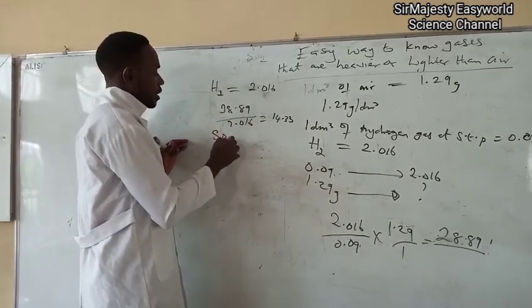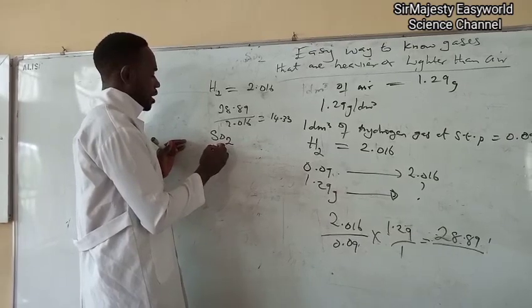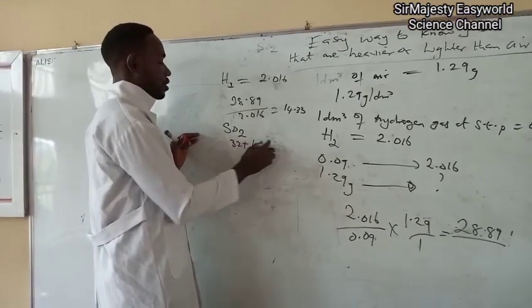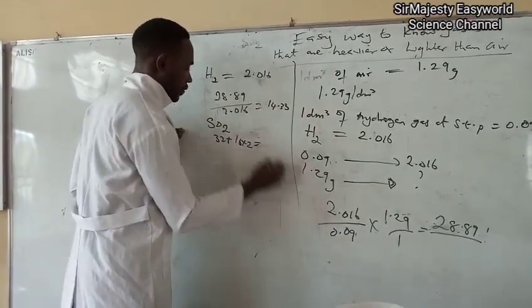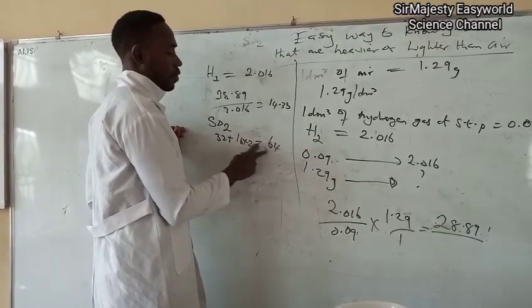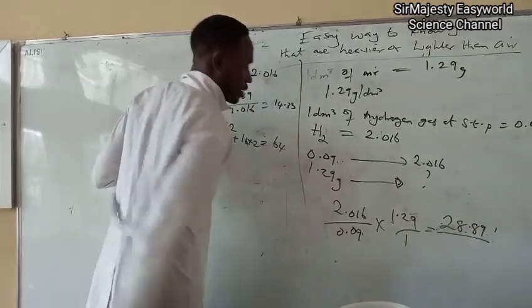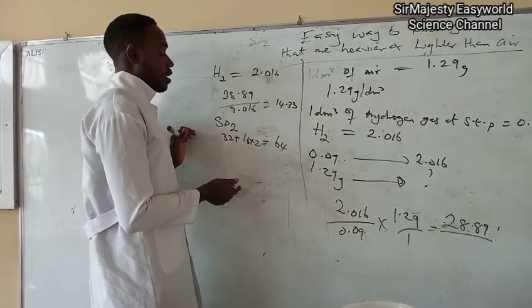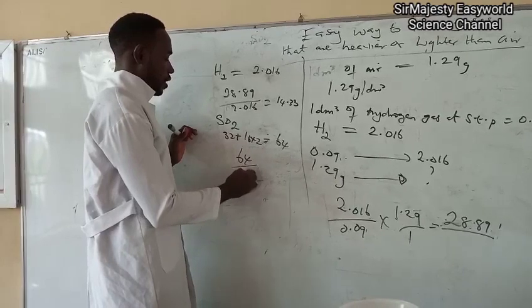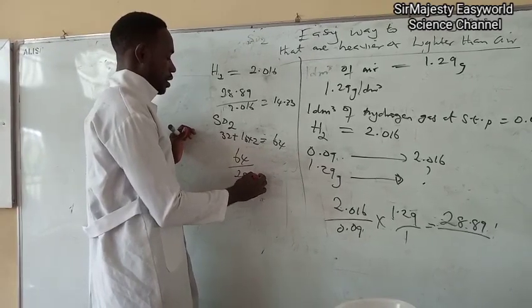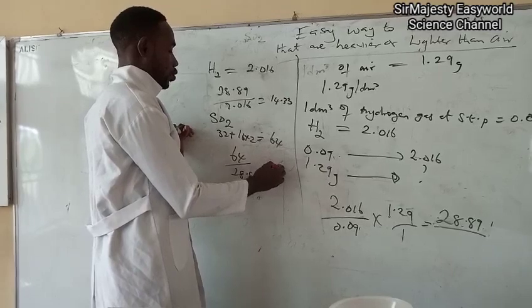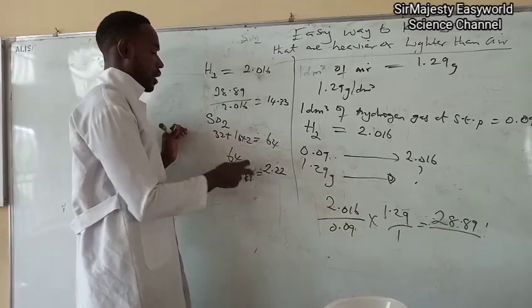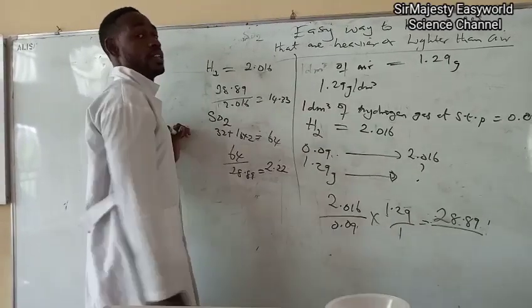We take a look at another gas. SO2. The molar mass, S is 32 plus 16 times 2 for oxygen, which will give us 64. So, is 64 less than or more than this? More than. It is more, which means SO2 is heavier than air. By how many times? You can say now 64 divided by 28.89, which will be 2.22. So, SO2 is about 2.2 times heavier than air.